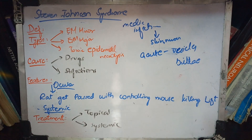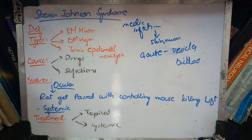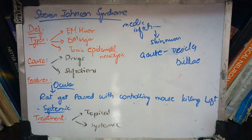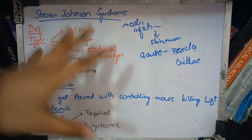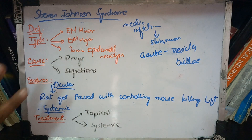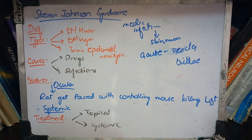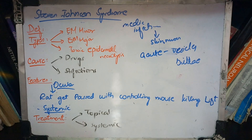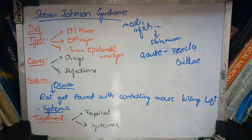Assalamu alaikum. In this video we are going to tell you about Stevens-Johnson Syndrome. When you read the chapter of Conjunctiva, this is mainly about conjunctiva and the eye, but actually this is not just related to the eye. This is a syndrome — more than a syndrome — involving more than one organ system.